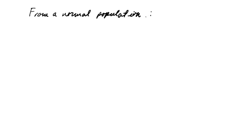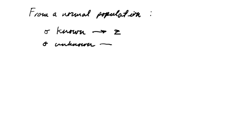If you are sampling from a normal population, two things can happen. You'll either know the standard deviation — if sigma is known, then you use Z. If sigma is unknown, you use T, unless the sample size is greater than or equal to 30, in which case you can use Z.